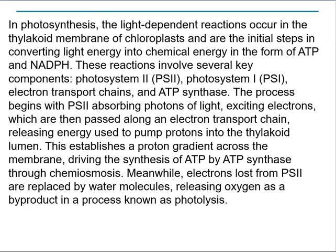The process begins with PS2 absorbing photons of light, exciting electrons which are then passed along an electron transport chain, releasing energy used to pump protons into the thylakoid lumen. This establishes a proton gradient across the membrane, driving the synthesis of ATP by ATP synthase through chemiosmosis. Meanwhile, electrons lost from PS2 are replaced by water molecules, releasing oxygen as a byproduct in a process known as photolysis.